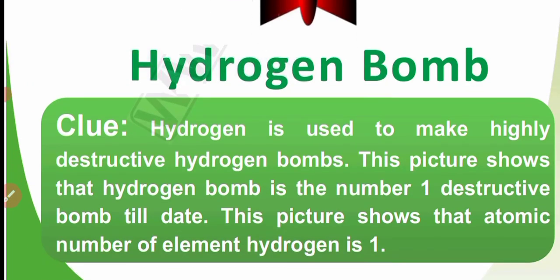Hydrogen bomb — hydrogen is used to make a highly destructive hydrogen bomb. This picture shows that the hydrogen bomb is the number 1 most destructive bomb to date, which helps us remember that the atomic number of hydrogen is 1. We have to remember the atomic number of hydrogen. The hydrogen bomb is the most dangerous bomb.